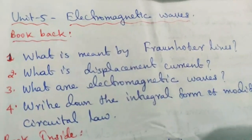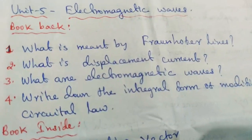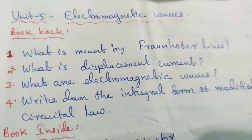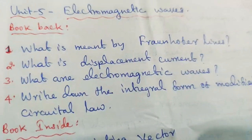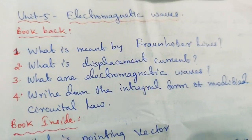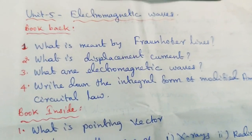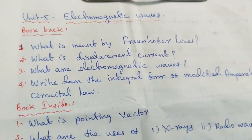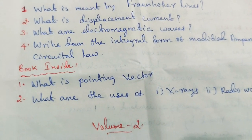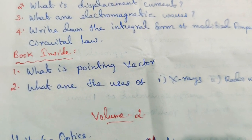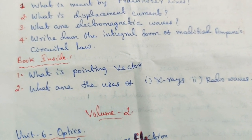Unit 5: Electromagnetic Waves. Book back questions: What is meant by Fraunhofer lines? What is displacement current? What are electromagnetic waves? Write down the integral form of modified Ampere's circuit law. Book inside: What is Poynting vector? What are the uses of X-rays and radio waves?